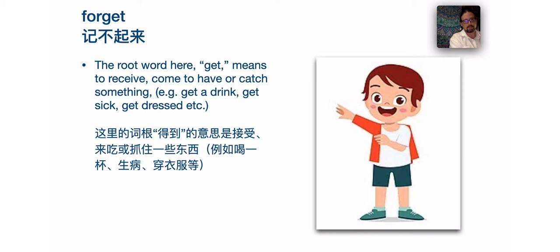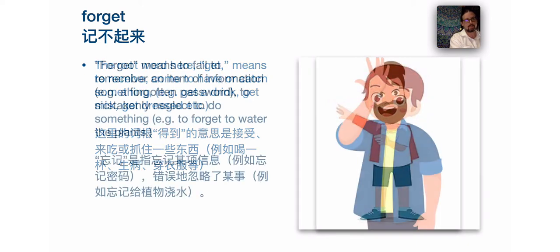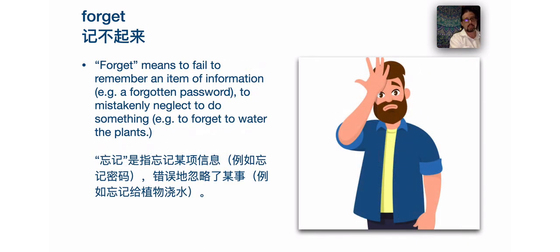The next word is forget. The root word 'get' means to receive, come to have, or catch something — as in get a drink, get sick, get dressed. Forget means to fail to remember an item of information. The prefix for added to get kind of means to lose: if get means to gain, forget means to lose. It means to fail to remember and to mistakenly neglect to do something — as in 'I've forgotten my password' or 'forget to water the plants.'